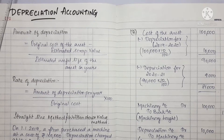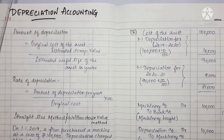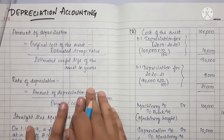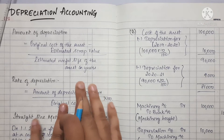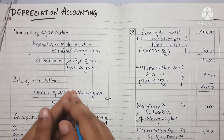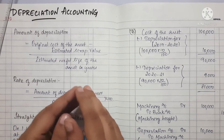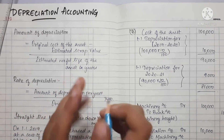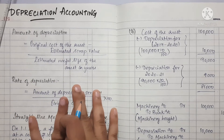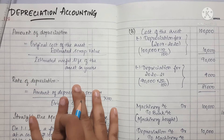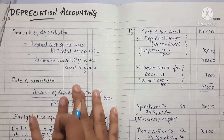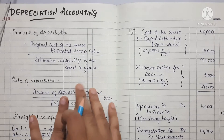Hi friends, welcome back to my channel Savvy Learner. Today we are going to talk about the 11th Accountants chapter. We are going to talk about 10 revision videos, specifically Depreciation Accounting. If you are going to subscribe to our channel, please click on the bell icon so you won't miss any videos.